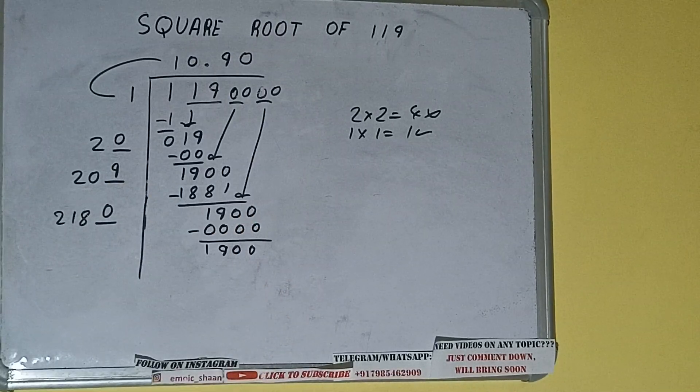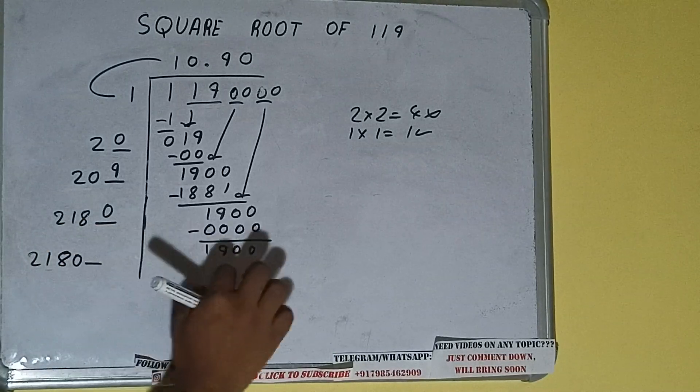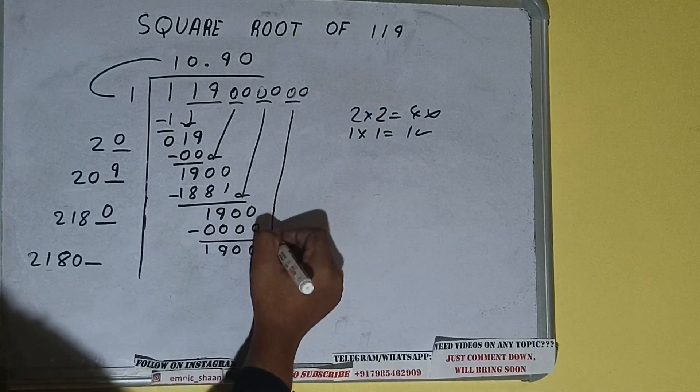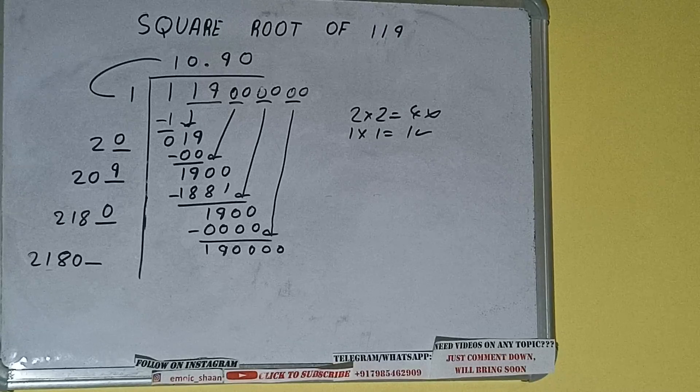But 1 digit extra, and this number we need to make it big. So bring the next pair of zeros down and it will be 19000. Compare this 21 with this 191, sorry 190.